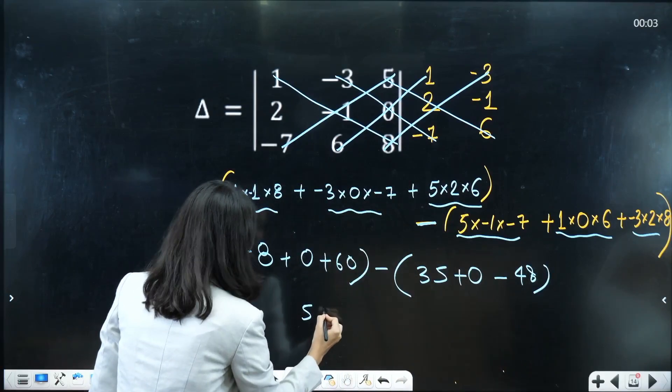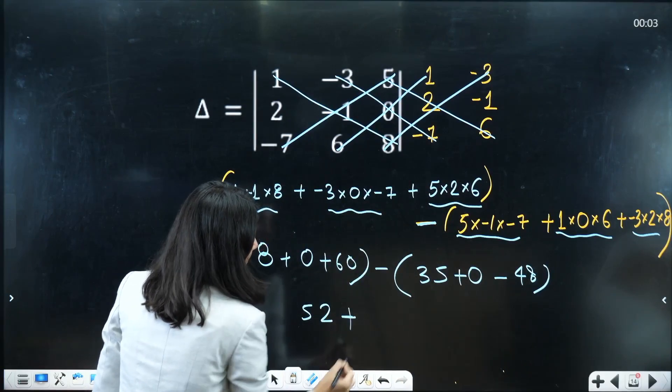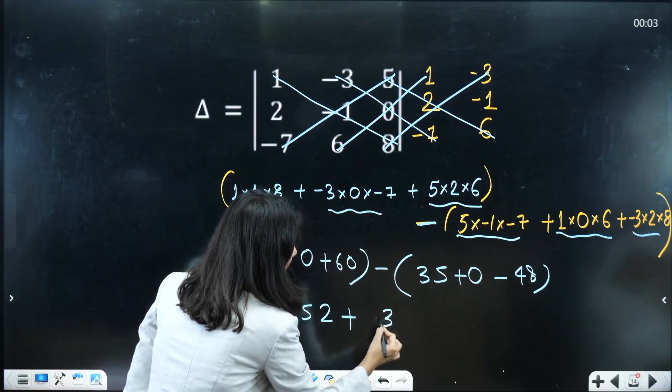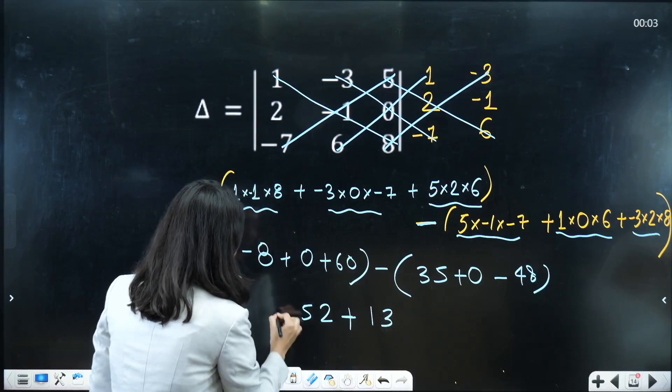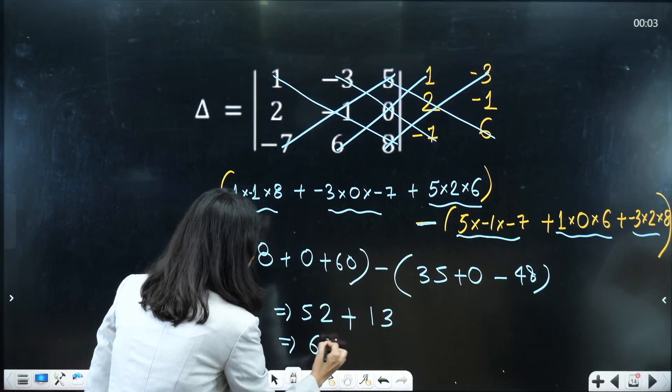So this is 52, basically this is plus, which is going to be 31. So the final answer would be 65.